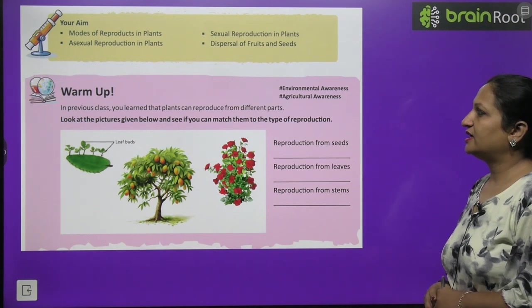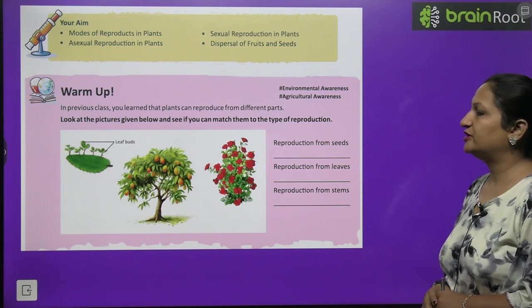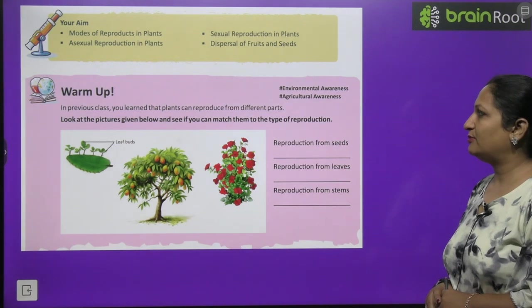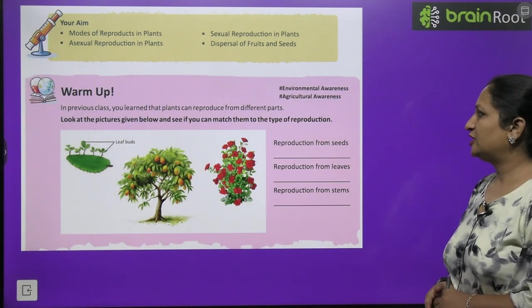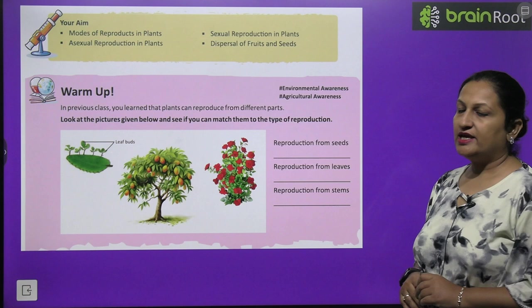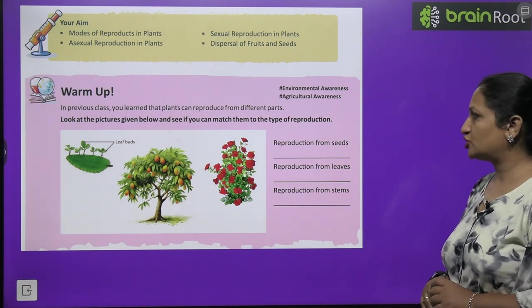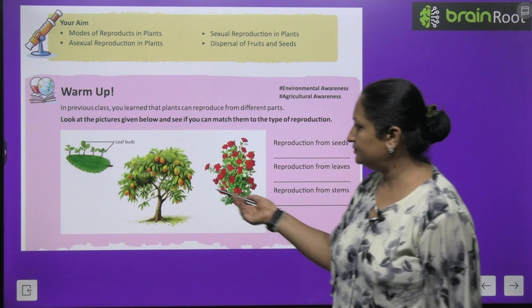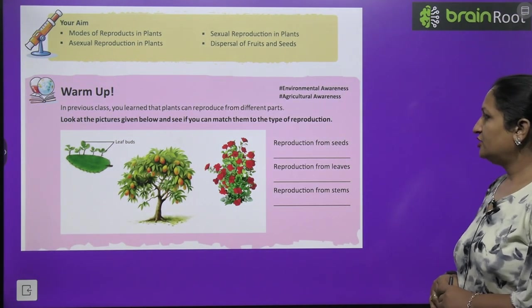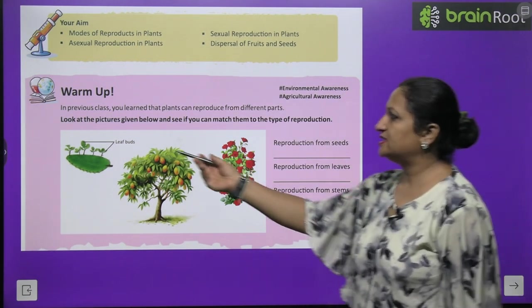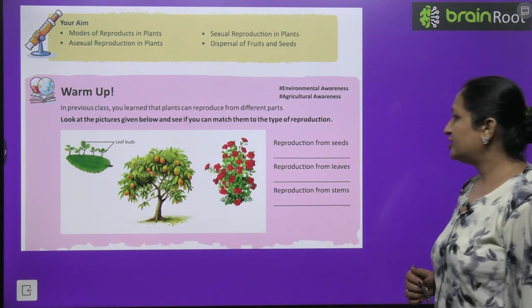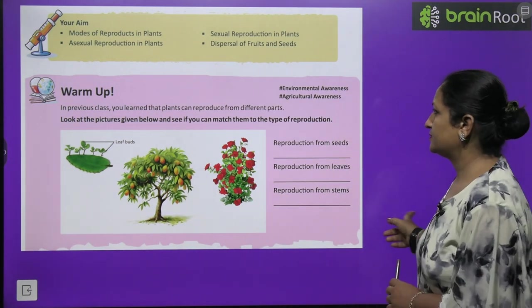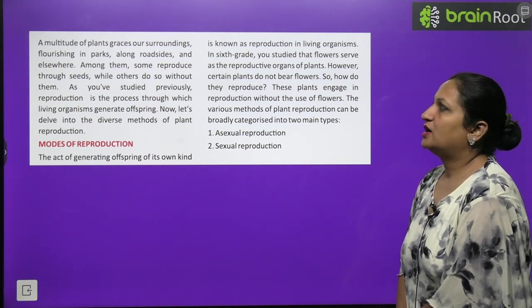Have a look on warm up children. In the previous class you learnt that plants can reproduce from different parts. Look at the picture given below and see if you can match them to the type of reproduction: reproduction from seeds like mango tree, reproduction from leaves like bryophyllum, and reproduction from stem like rose plant.